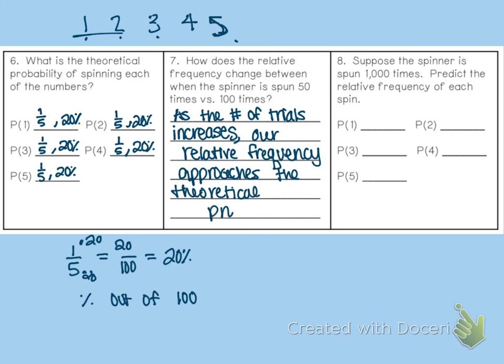So we started off doing the theoretical probability, like best case scenario, like this right here is theoretical probability. You have a one in five chance, a 20% chance, but once we actually experimented, we might've landed on one two times and on three zero times, you know what I mean? So theoretically, we have a 20% chance to land on each number. So as the number of trials increases, we're going to be close to that 20%. The less trials we do, some of those could be at 0%.